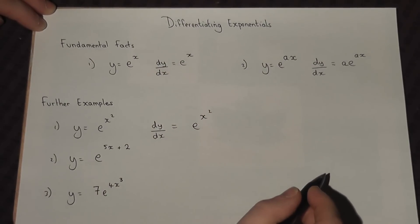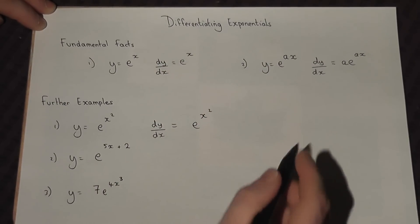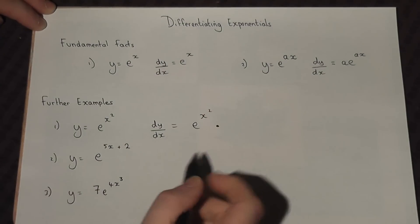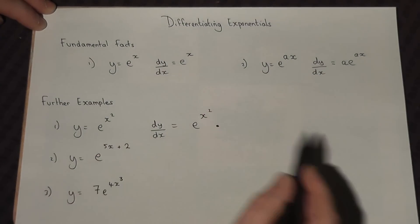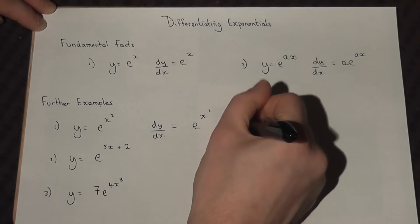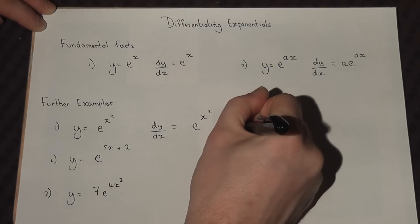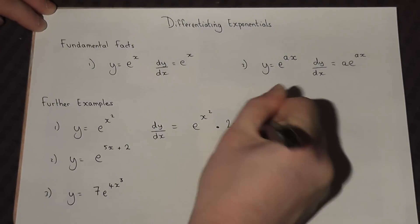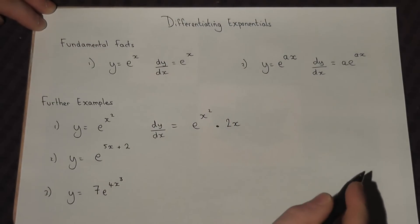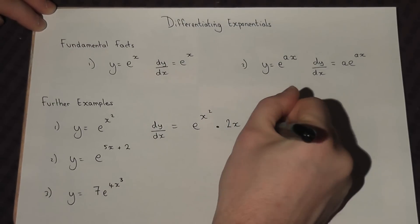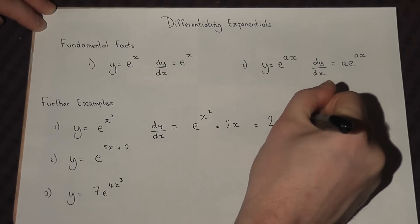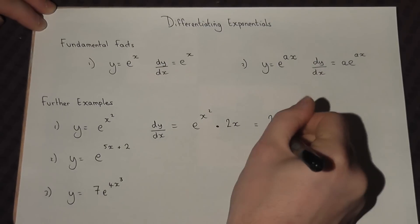The chain rule says we then multiply by the power differentiated. Well, x squared differentiates to 2x. So it's e to the x squared times 2x, which we often write as 2x·e to the power of x squared.